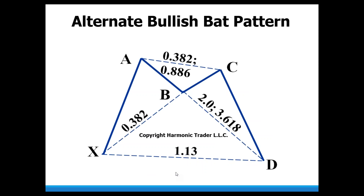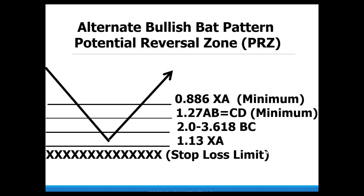Take a look at this illustration — a nice M formation. We're always looking at the B point at 38.2% or less, and that sets up this deeper retracement. We include the 113, but we look at a minimum 886 level. We typically like to see price come back and retest the starting point at X. The 113 is the absolute low point for the potential reversal zone. The ABCD is a minimum but usually an alternate calculation — it's extended. Same with the BC measurement; the 113 at that XA level is the absolute low.